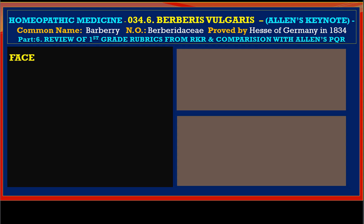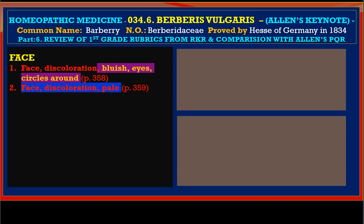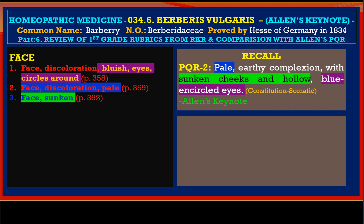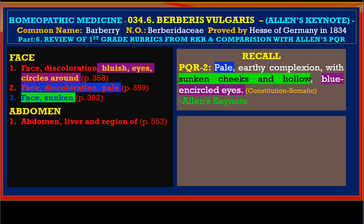Let us go to the face region where we have got first grade rubric representation: face discoloration, bluish eyes, circles around, and then face discoloration pale, face sunken. This is what we find has been taken up from Allen's, or Allen has given this rubric the significance which Kent has also given a first grade representation. This rubric has been taken up in PQR2 in Allen's keynote and it belongs to the constitution and somatic physical attributes of Berberis Vulgaris.